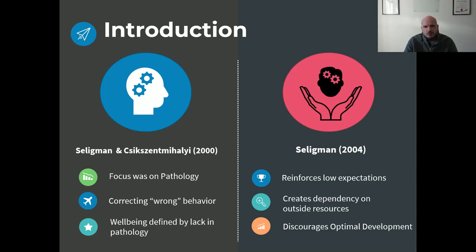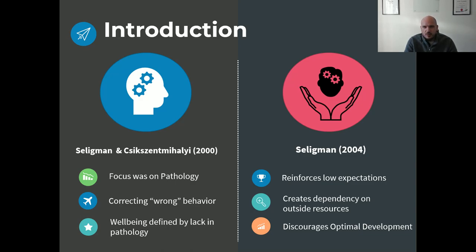By reinforcing negative ideals in a coaching relationship — focusing on the negative stuff — it really reinforces the low expectations that I already have about myself, about people, about life. If I constantly talk about how negative stuff is, it's just going to keep making me negative. This is a downward spiral. If we keep focusing on the negative, you become dependent on the coach, dependent on external resources to make you feel better. And it discourages optimal development.